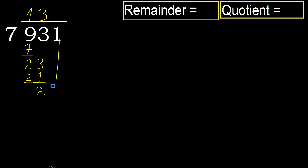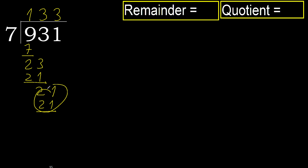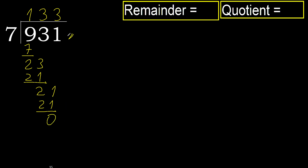Next: 21. 7 multiplied by 3 is 21 — 21 is not greater. Subtract. Next, there is no number, therefore finish it.